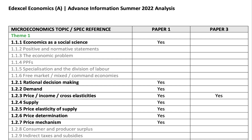So theme one — the micro. In terms of what has been left out from the advance notice: they have taken out positive and normative statements, the economic problem and production possibility frontiers. Although keep in mind you'll probably need to know about PPFs, particularly when talking about international trade and comparative advantage. Specialisation and division of labour is out, as are topics about different types of economic system — free market, mixed and command economies.